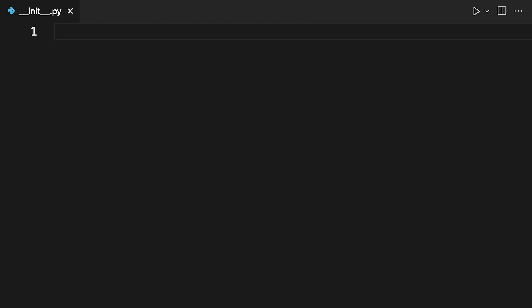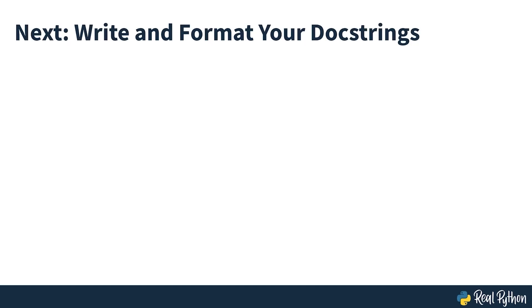As seen on screen, you'll keep the second file, dunder init.py, empty for now. It's here to help declare calculator as a package. Later on, you'll add package-level docstrings in the file, which you'll also pull into your auto-generated documentation. In the next section of the course, you'll add docstrings to your functions, which will set you up to generate documentation directly from these docstrings.